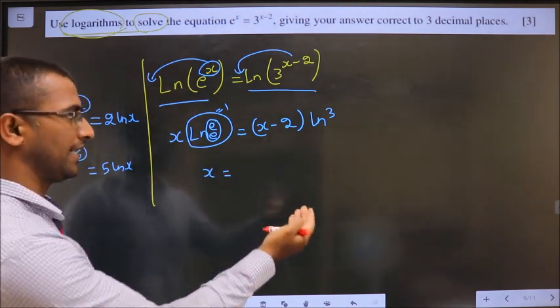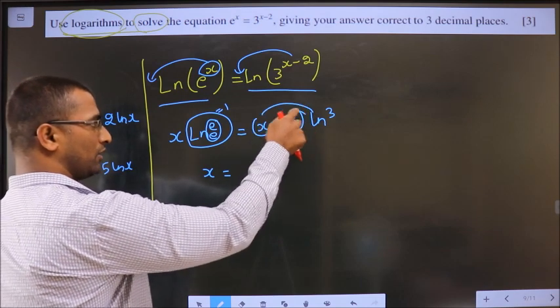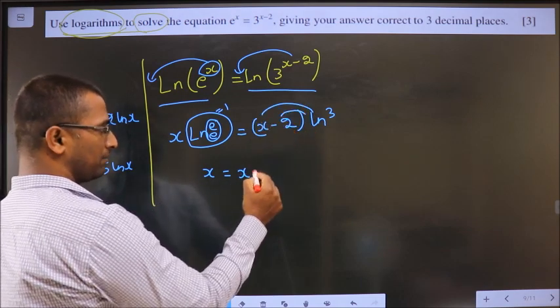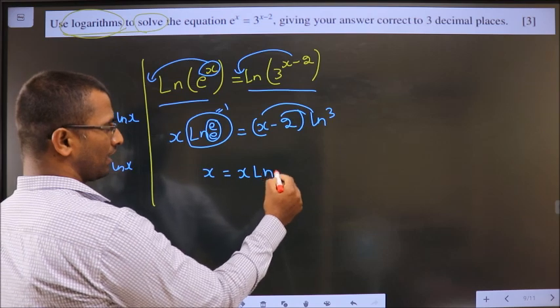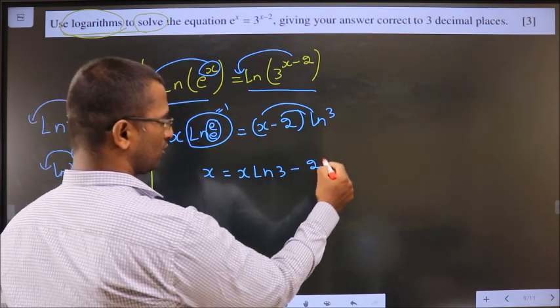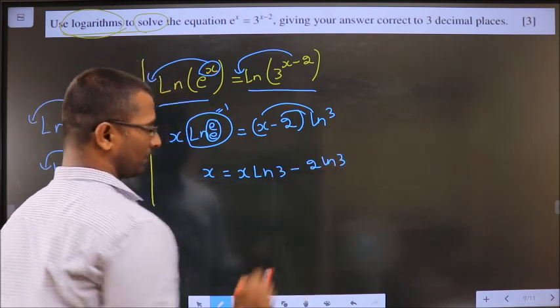And on this side, to simplify, I multiply to each. That will give me x ln 3 minus 2 ln 3. Okay.